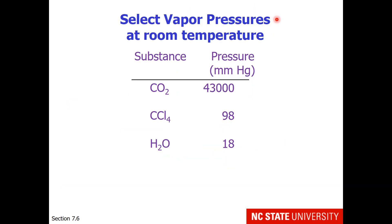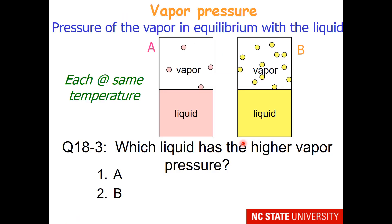Here are some select vapor pressures at room temperature to give you an idea of how intermolecular forces play a role in this. You notice that carbon dioxide, which has very low intermolecular forces, has a large vapor pressure at room temperature, whereas water has great intermolecular forces and has a lower vapor pressure at room temperature. So this brings up the relationship between vapor pressure and intermolecular forces.